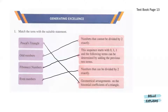Let's see the statement: numbers that cannot be divided by 2 exactly. So these numbers are odd numbers. Next, this sequence starts with 0, 1 and 1 and the following terms can be determined by adding the previous two terms.